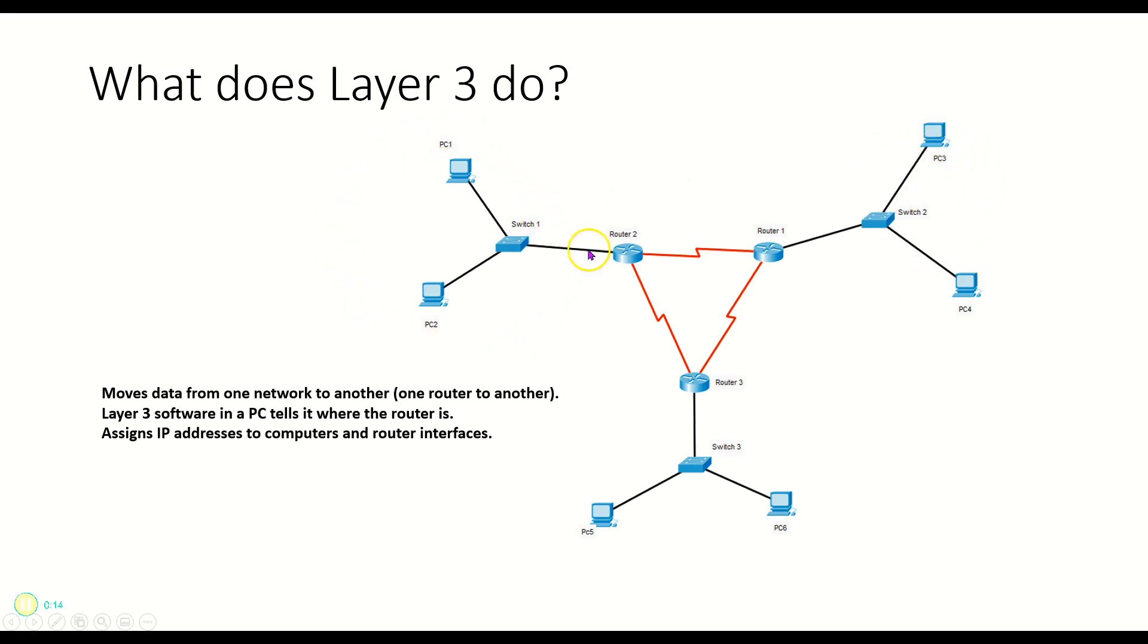Now Layer 2 is all about getting around within a single network. Layer 3 wants to cross from one network to another.